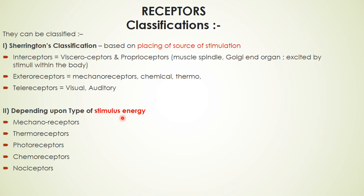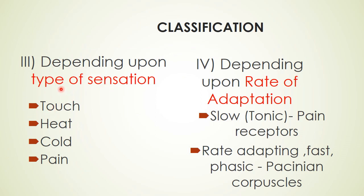Receptors can also be classified by the type of stimulus energy required. Mechanoreceptors require mechanical distortion; thermoreceptors require temperature change; photoreceptors require photons (visual); chemoreceptors respond to chemicals; nociceptors respond to pain-stimulating stimuli. Another classification is by the type of sensation produced — touch, heat, cold, and pain receptors.